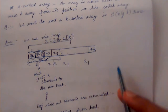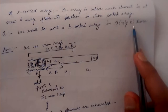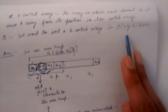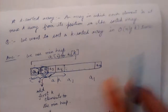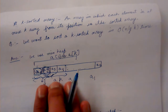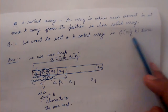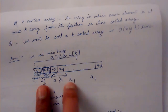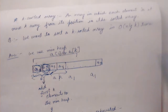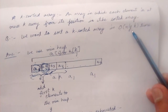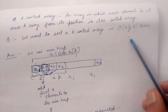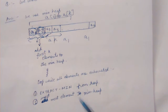We want to sort a k-sorted array in time O(n log k). The optimal time for sorting a general array of size n is O(n log n), but if we are given a k-sorted array where k is smaller than n, we can sort it in time O(n log k). Since k is smaller than n, this time is also smaller — so sorting a k-sorted array requires less time than sorting a general array.